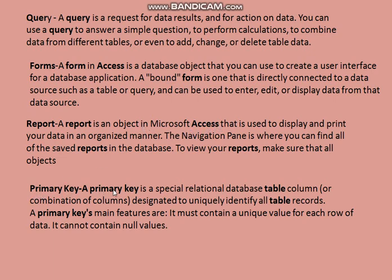Primary Key: A primary key is a special relational database table column designated to uniquely identify all table records. The primary key value must be unique. In our example, the role number can be used as a primary key because it does not repeat.